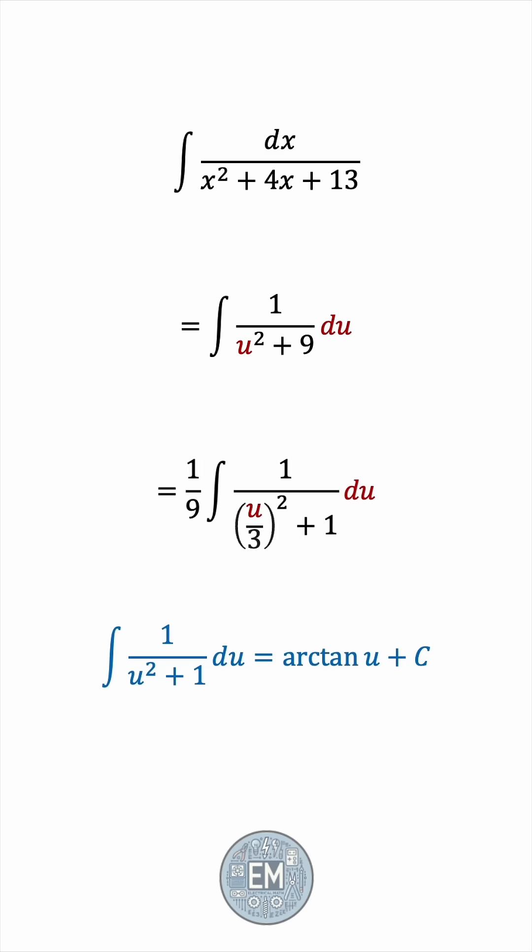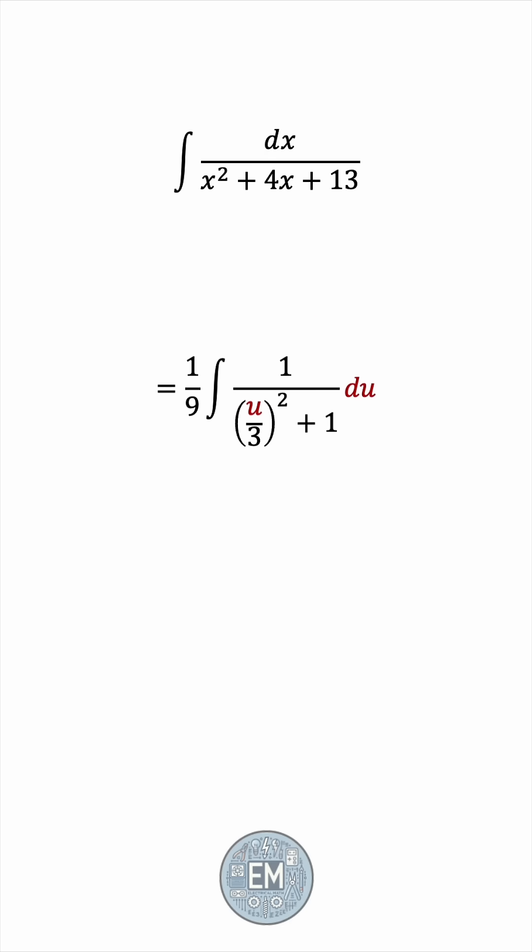And now we're a little bit closer to this arctan form. But the squared entity we're working with is now u over 3. And this calls for another substitution. Some v equals u over 3. dv would be 1 third du.